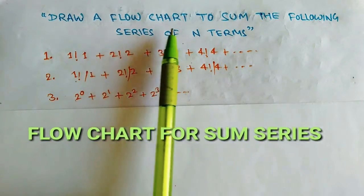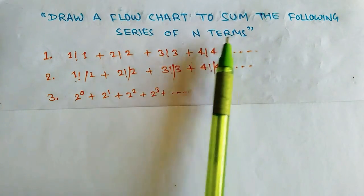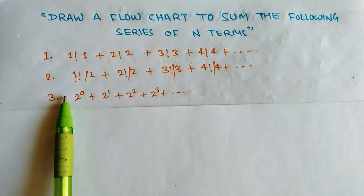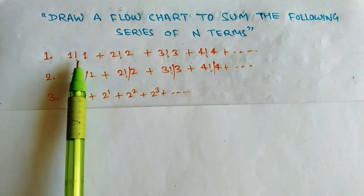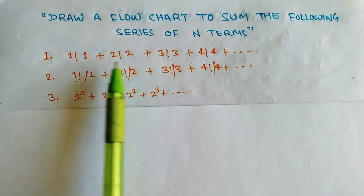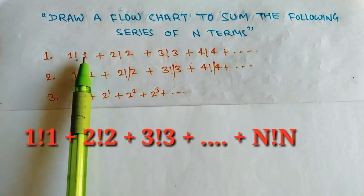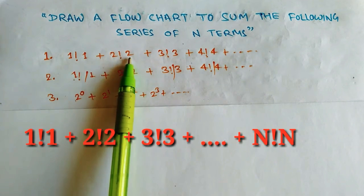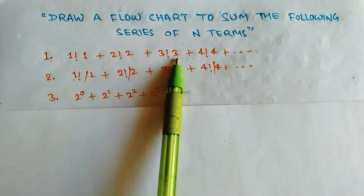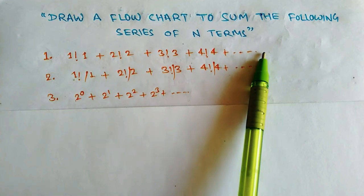The title is: draw a flowchart to sum the following series of n terms. Three problems are taken. The first series is 1 factorial multiplied by 1, plus 2 factorial multiplied by 2, plus 3 factorial multiplied by 3, and so on. The last term will be n factorial multiplied by n.